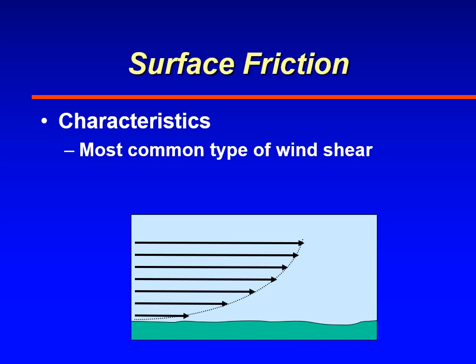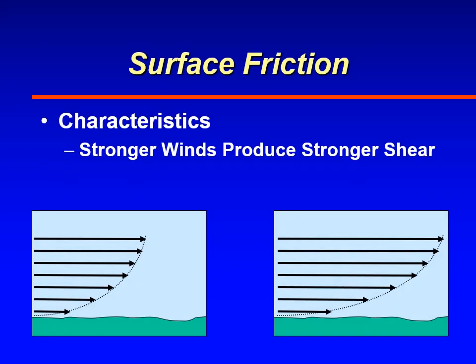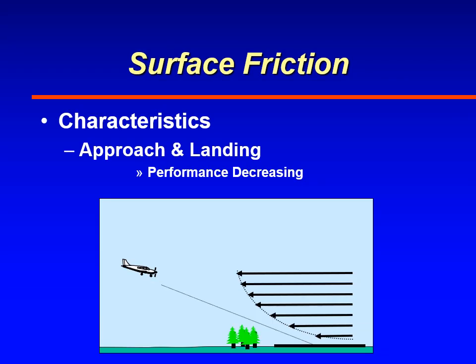With stronger winds, you get stronger shears in the lowest layers of the atmosphere. Winds of 25 knots or greater produce really strong shears — the shear gradient is severe. Normally you'll see this during approach and landing. During departure it's not so much a concern, because during departure performance is increasing as you climb out and experience a stronger and stronger headwind. But coming in for a landing, that's when you've got a problem.